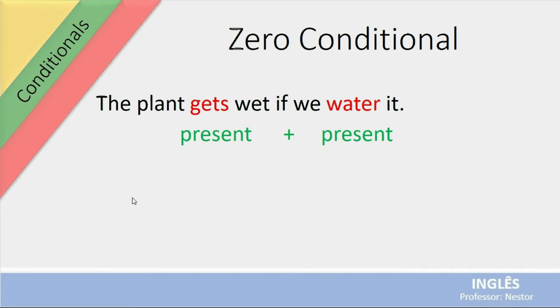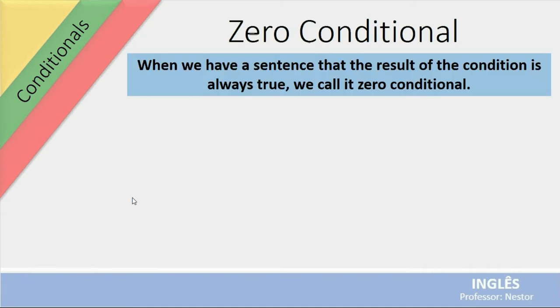Pay attention on it. Eu também posso fazer uma inversão nessa frase e posso dizer assim: If we water, the plant gets wet. Se a gente aguar, a planta fica molhada. Então, eu posso fazer essa inversão. There's no problem. A ordem aqui não vai prejudicar o sentido.